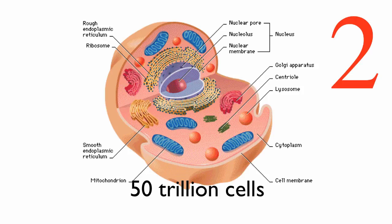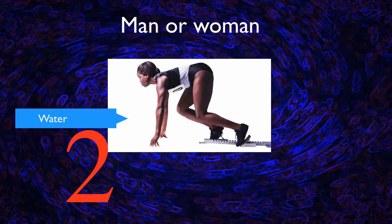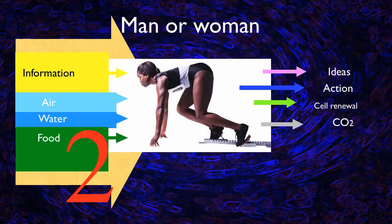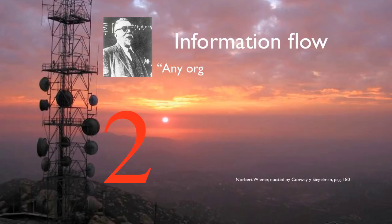Given the principle of recursion, cells exhibit the same characteristics of the organism of which they are a part. Each cell of every plant and animal is a living vortex, given that it is built with the materials that flow through them. Each vortex has a definite shape, but is really made of the material that flows through it. This graph shows the inputs and outputs of a human being: information, air, water, food coming in; thoughts, action, cellular renewal, and waste going out.